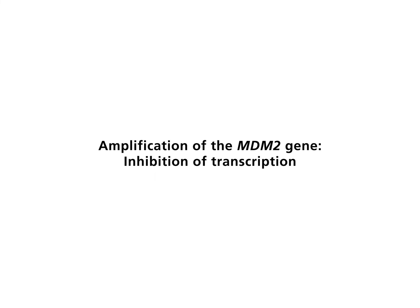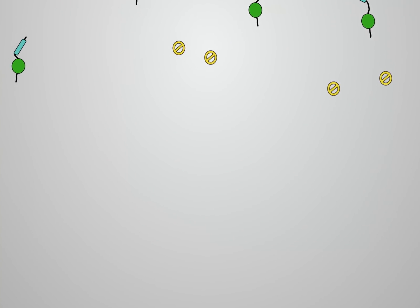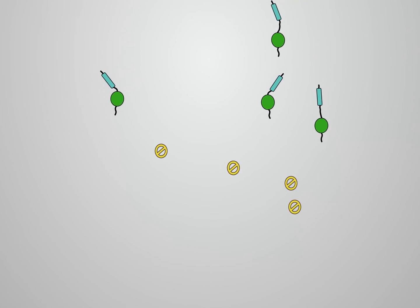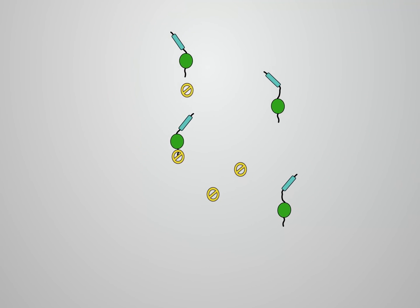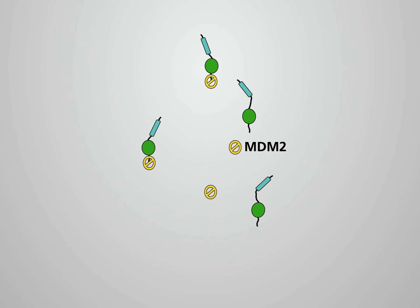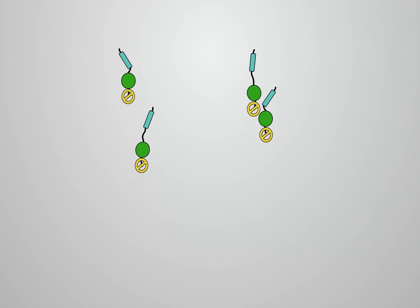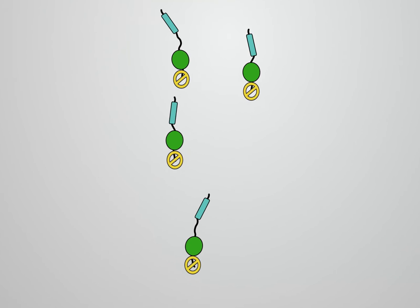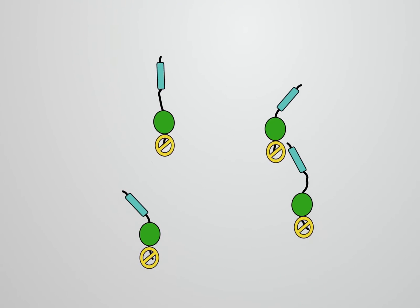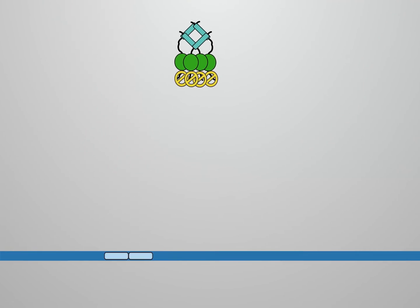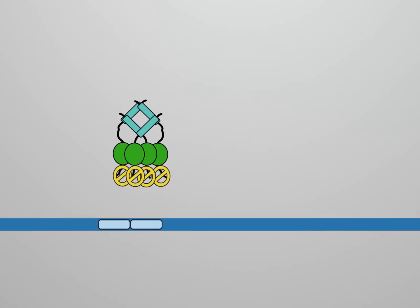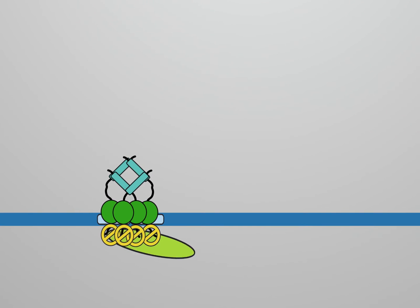Amplification of the MDM2 gene, inhibition of transcription. The MDM2 gene is amplified in about one-third of human soft tissue sarcomas. The gene product, shown in yellow, binds to the aminoterminal transactivation domain of P53. MDM2 associated with the transactivation domain inhibits the binding of transcription factors to the transactivation domain. In this way, transcription of the target genes is blocked.